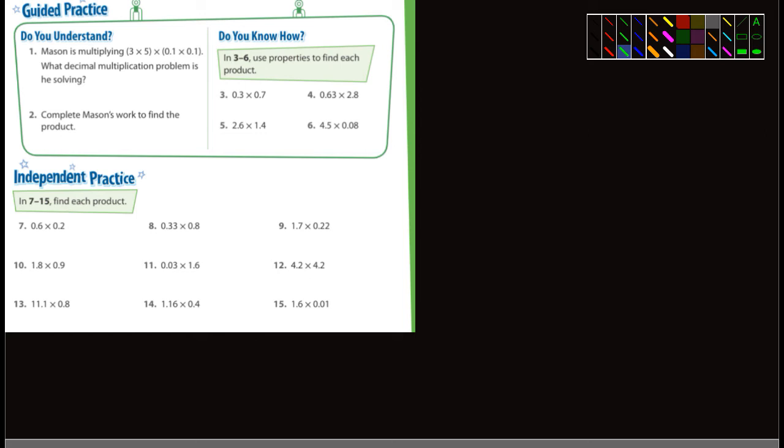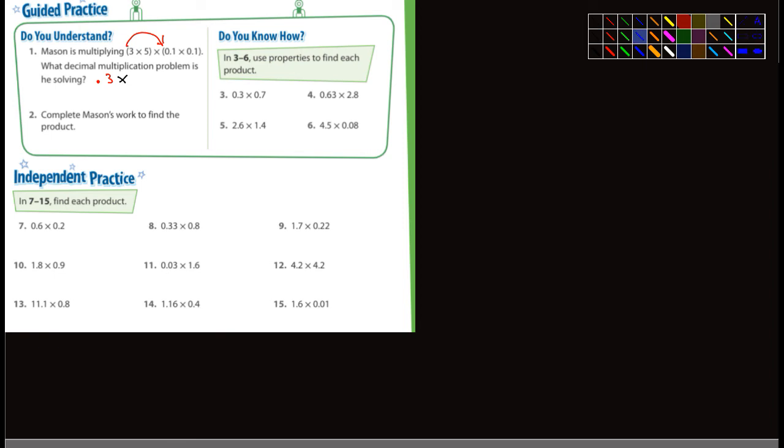What decimal multiplication problem is he solving? Well, think about it this way. What is 3 times 0.1? That's going to be 0.3. And that's going to be times, and then what's 5 times 0.1? That's 0.5. And so really, that's what he's solving, 0.3 times 0.5.